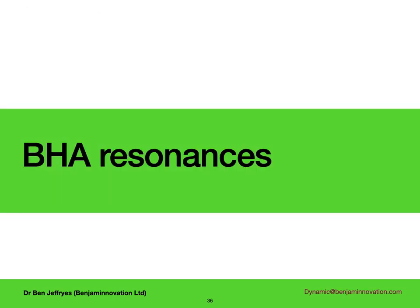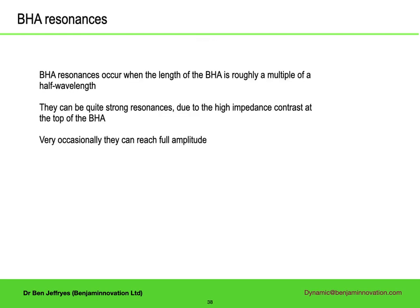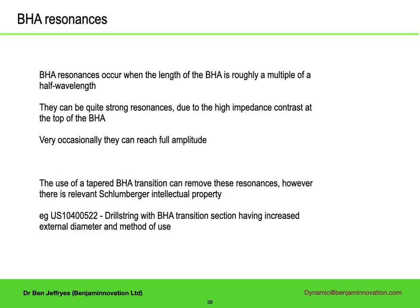Before finishing, just a word about BHA resonances — these features are due to vibration being partially trapped in the BHA, due to the impedance transition between the BHA and the pipe. They appear at frequencies where the BHA length is roughly a multiple of half a wavelength. For rotational oscillations they can be quite strong, as there is a high impedance contrast. Very occasionally you can get stick-slip at these frequencies, though it is uncommon. You don't have to have them though. If the impedance transition is gradual, the rotational energy is not trapped.